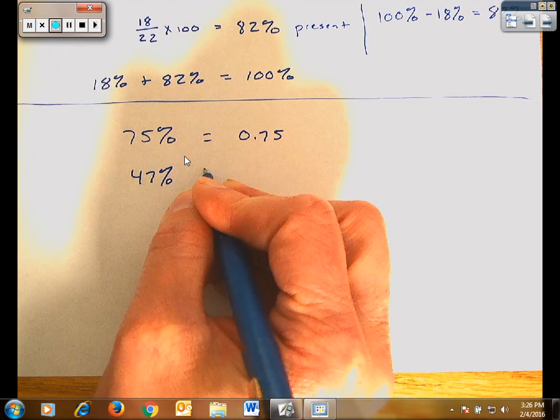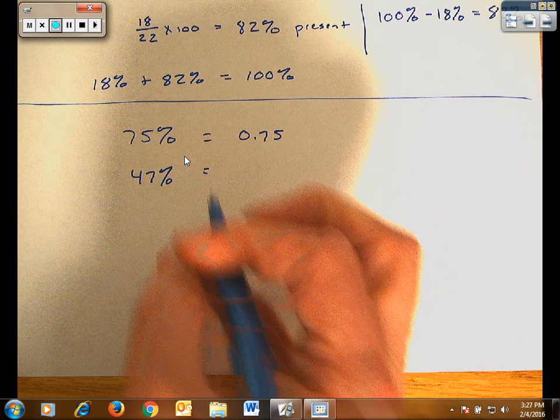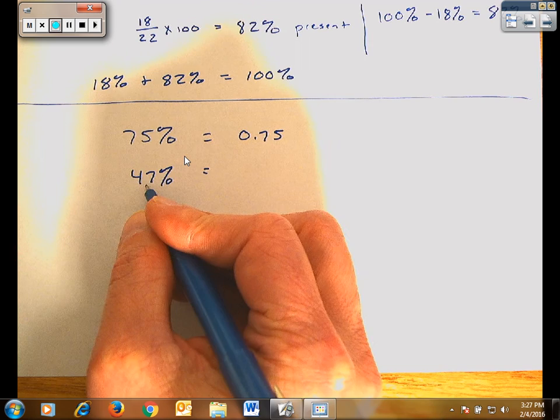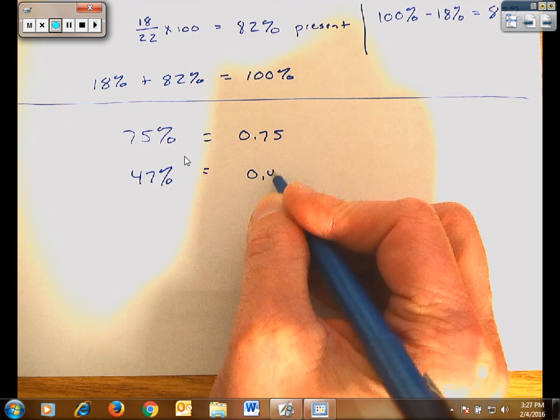47%. Again, if we want to convert that into a decimal, we'll move that decimal point two places to the left. 0.47.